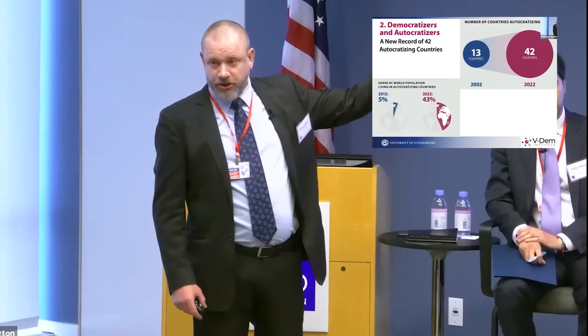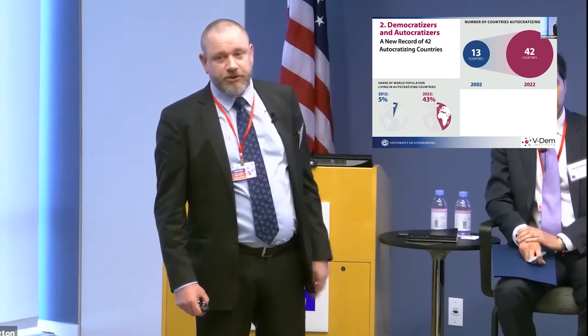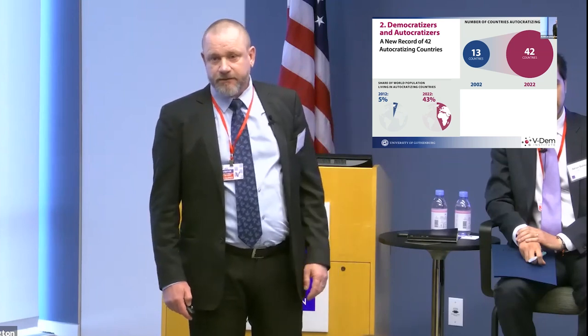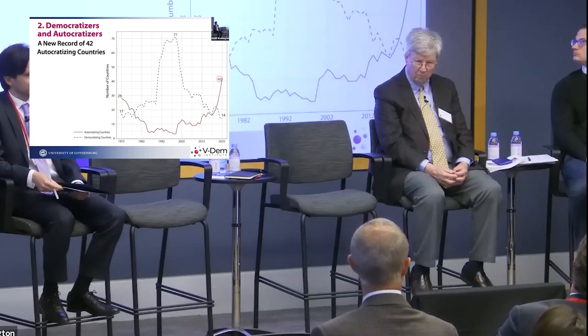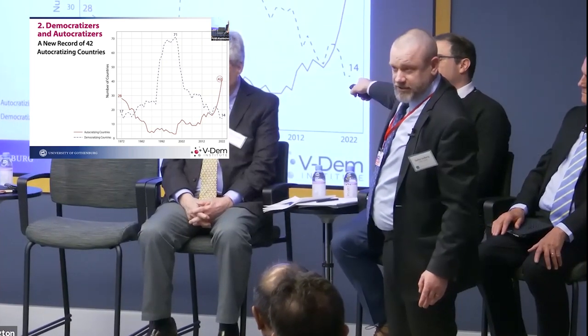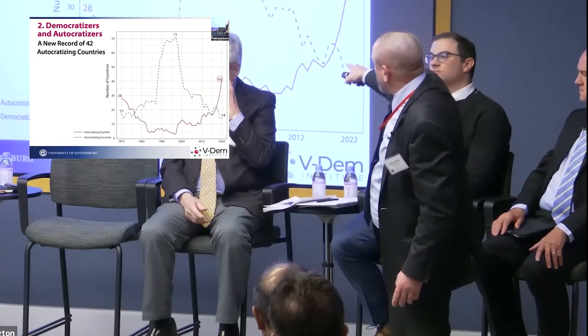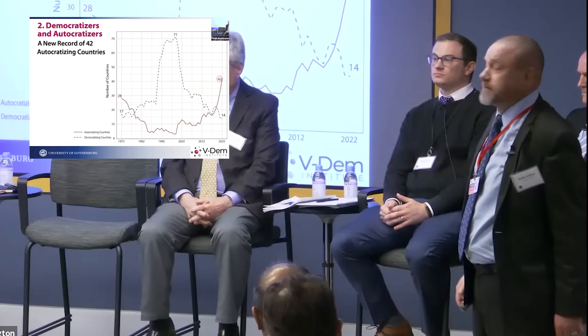The number of countries autocratizing — showing statistically significant change for the worse — has risen from 13 countries twenty years ago to 42 countries by end of 2022. This graph from 1972 shows that when Fukuyama wrote The End of History, 71 countries were moving forward on democracy — no wonder he wrote that book. Now that number is down to 14, while autocratizing countries number 42 — a historical record.